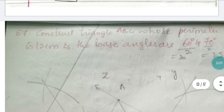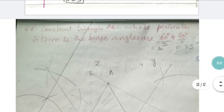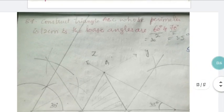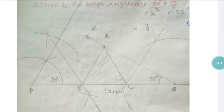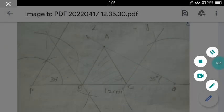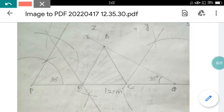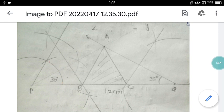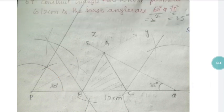Question 87: construct triangle ABC whose perimeter is 12 cm and base angles are 60° and 70°. Find half of each angle — 30° and 35° — and draw the diagram accordingly. I'll pause the video briefly so you can see the diagram clearly. The triangle ABC has a perimeter of 12 cm with base angles 60° and 70°.